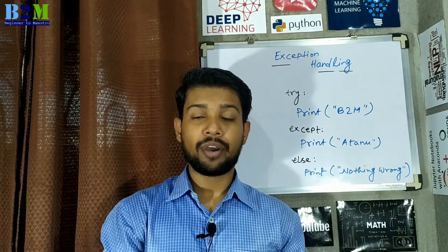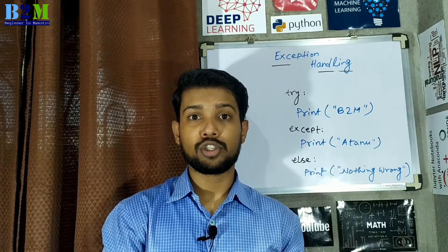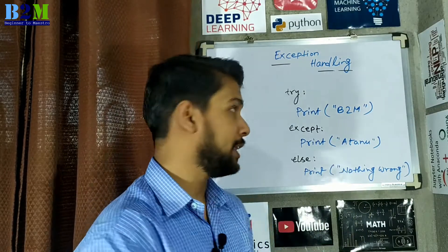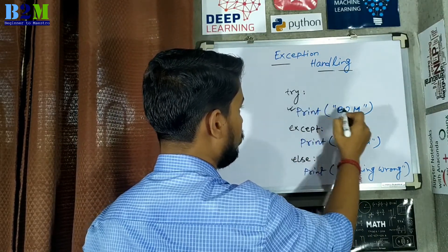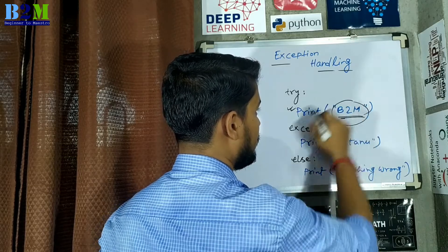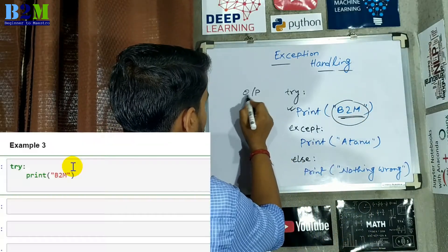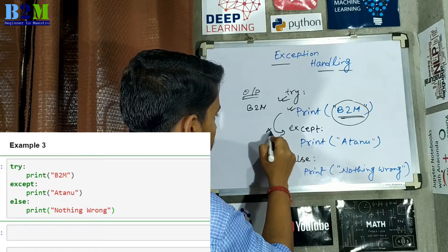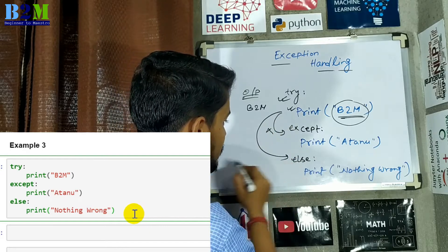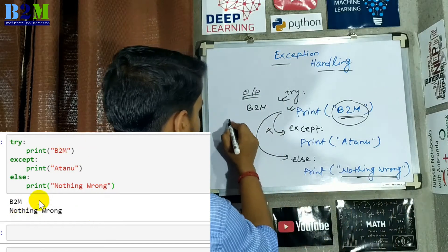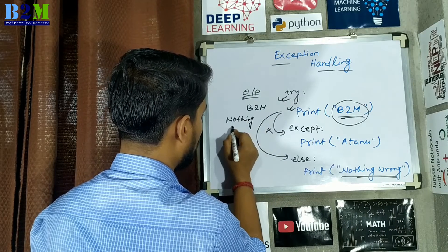You can use the else keyword to define a block of code to be executed if no error occurred in the try block. For this example, there is no error in the try block because we are printing something within quotation marks — that is a string, not a variable. So there is no error. The output will be: first 'B2M' is printed within the try block, then since there is no exception it goes directly to the else part and prints 'nothing wrong'.